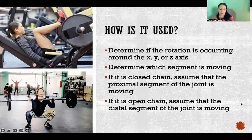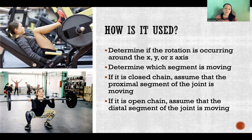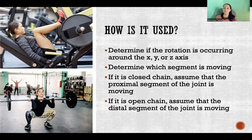So how do we use the right-hand thumb rule? The first thing is we need to determine what is the axis of rotation for that movement — is it the X, Y, or Z axis? If we look at these pictures, we have somebody doing a hip sled or leg press, and a squat. Both of these are primarily happening in the sagittal plane, which would be around the X axis, or the medial-lateral axis of rotation. So first we determine the axis of rotation.